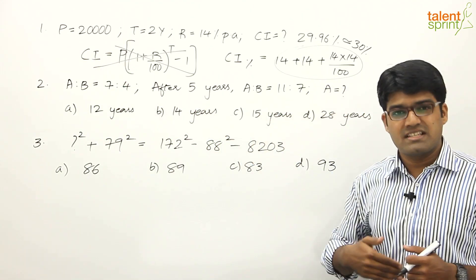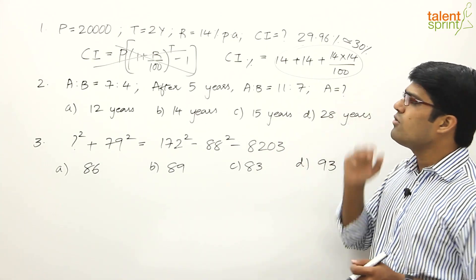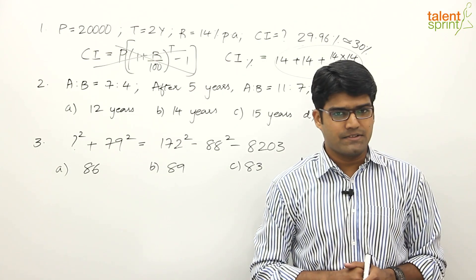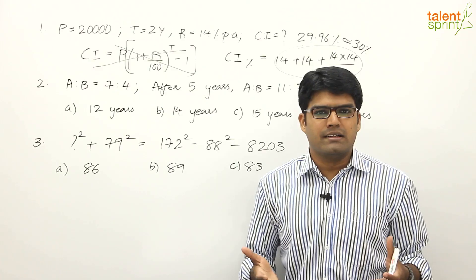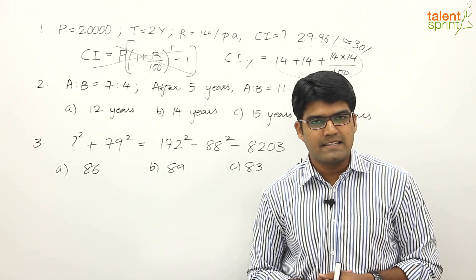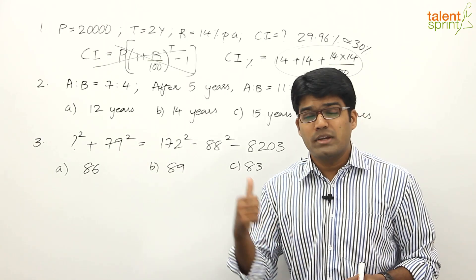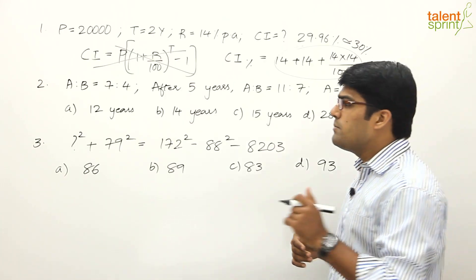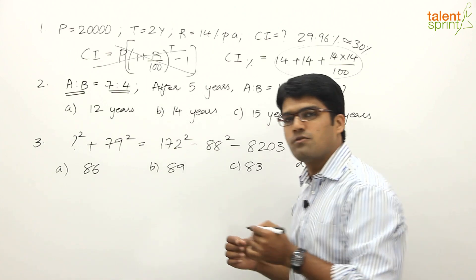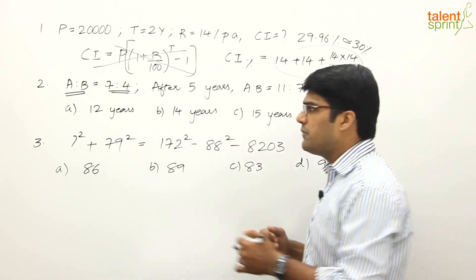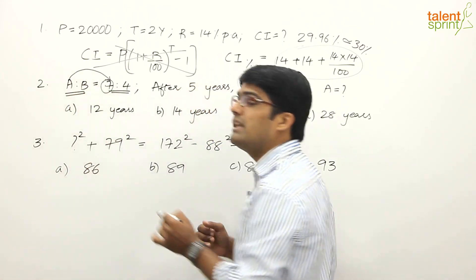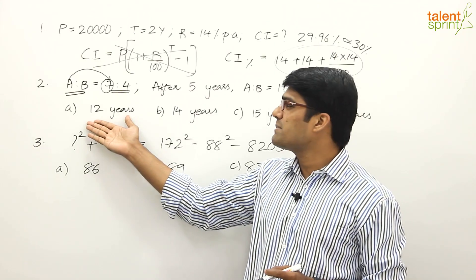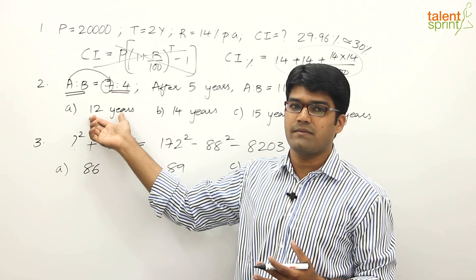The answer options are 12 years, 14 years, 15 years, and 28 years. Most students use the traditional method and spend 45–60 seconds, but with substitution you can answer in under 10 seconds. Key observation: since A:B = 7:4, A's age must be a multiple of 7. Option A is 12 years — 12 is not a multiple of 7, so it's eliminated.